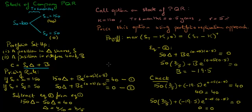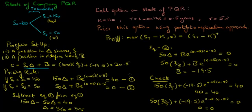The price of this call option equals the current stock price of 100 times delta, which is 2 over 5, plus a short position in the risk-free bond of 19.5, giving a call option price of 20.5. We have used the portfolio replication approach to price an option in a discrete-time framework. If there are any questions or comments, please feel free to post. Thank you.